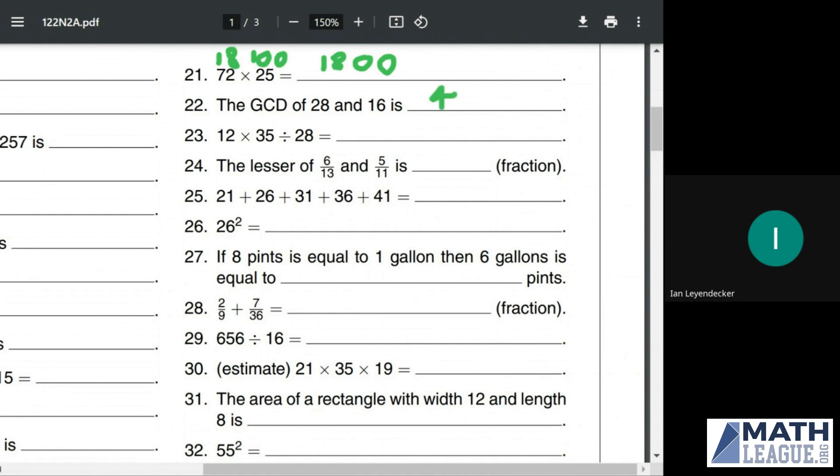For 12 times 35 divided by 28, first of all, notice that we can divide both 28 and 35 by 7, and both 12 and 28 by 4. So if we divide the 28 by 7 and the 35 by 7, we get 5. And then if we also divide the 28 by 4, the 28 completely goes away, and the 12 becomes a 3 for final answer of 3 times 5 or 15.